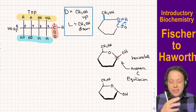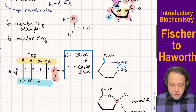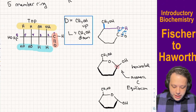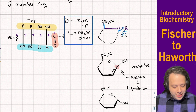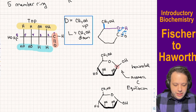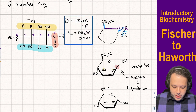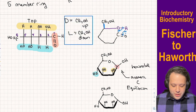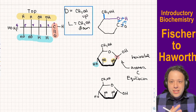Now we fill in our blue and yellow groups from before. Yellow is pointing up — the first two OHs were up and the third was down. So on our ring: OH up, OH up, OH down. Color coding: yellow, yellow, and then blue for the downward one. That is our structure.